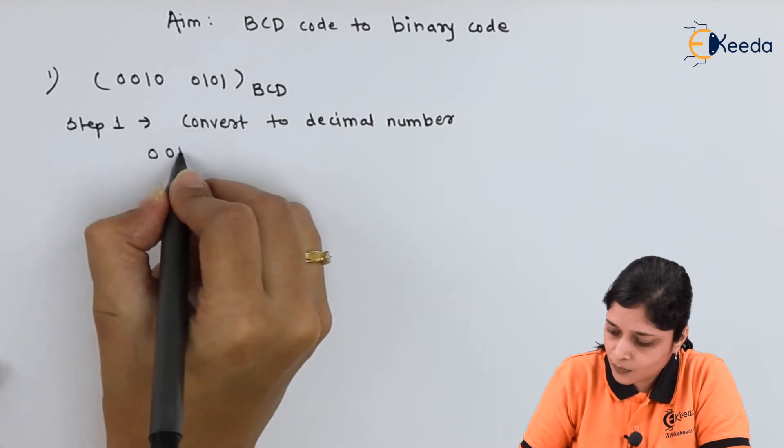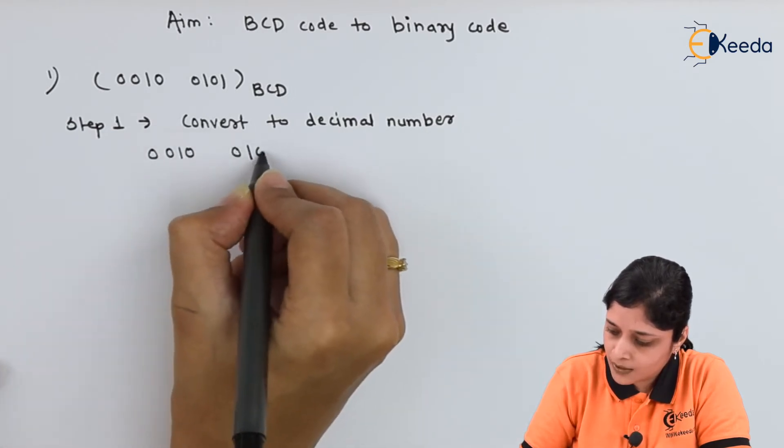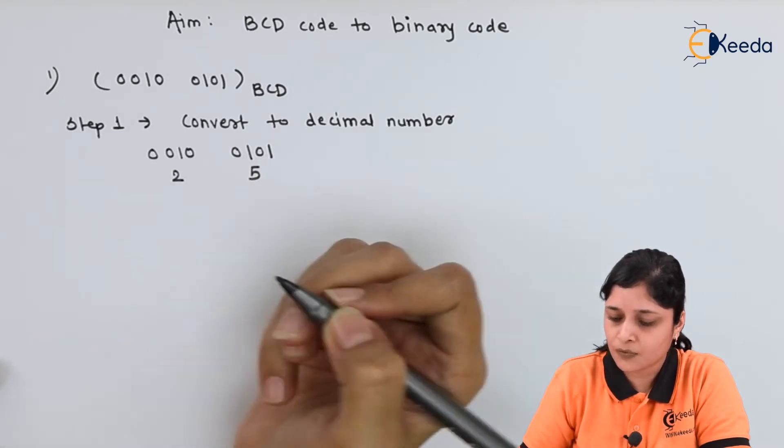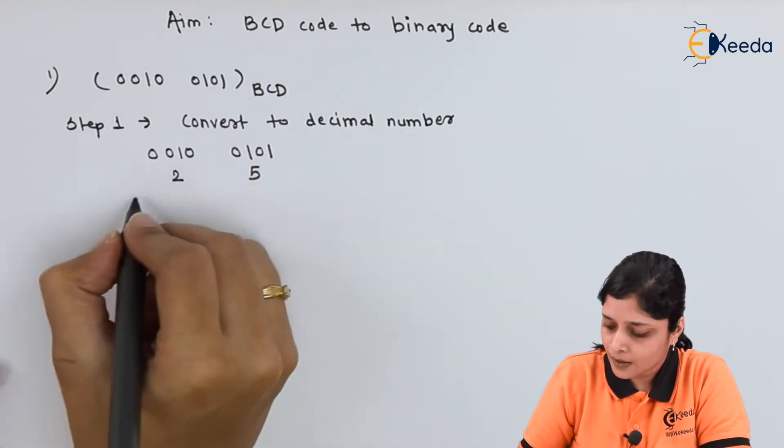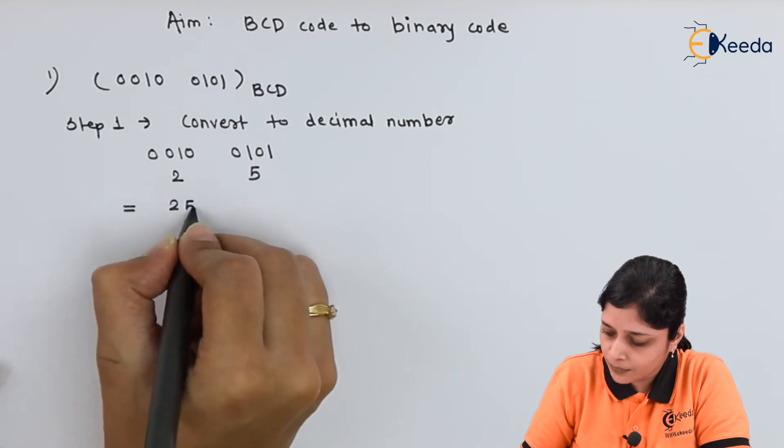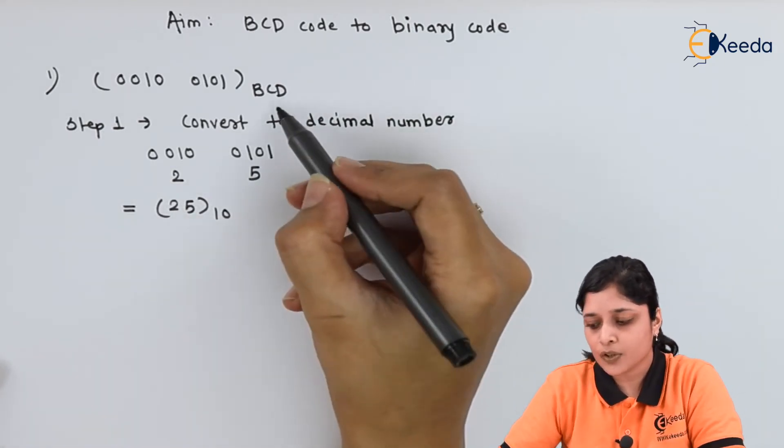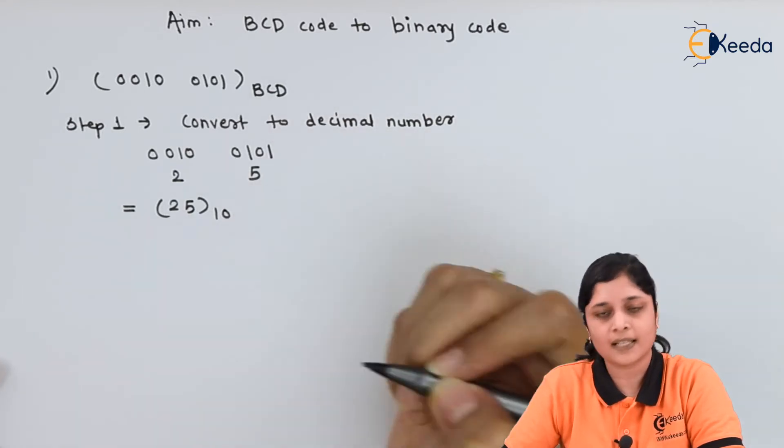So, for 0010, 0101, you have 2 here and here 5. 4 plus 1 will give you 5. So, 25 to the base 10 is the value for conversion of BCD to decimal.